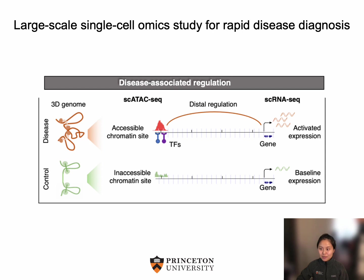In disease cells, compared to control cells from healthy or another disease condition, chromatin sites can be newly activated by transcription factors with increased accessibility or decreased activity if suppressed by binding proteins, and then regulate the transcription of their target genes in a 3D genome with over or lower gene expression. This provides us with an opportunity to query disease-associated molecular markers for rapid disease diagnosis.